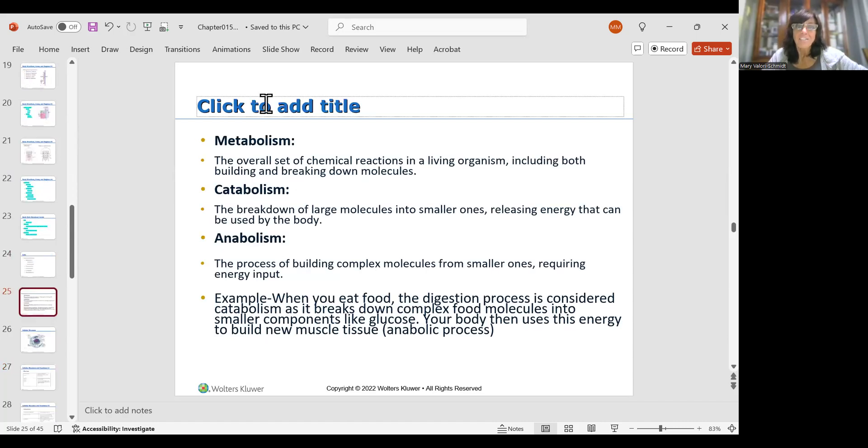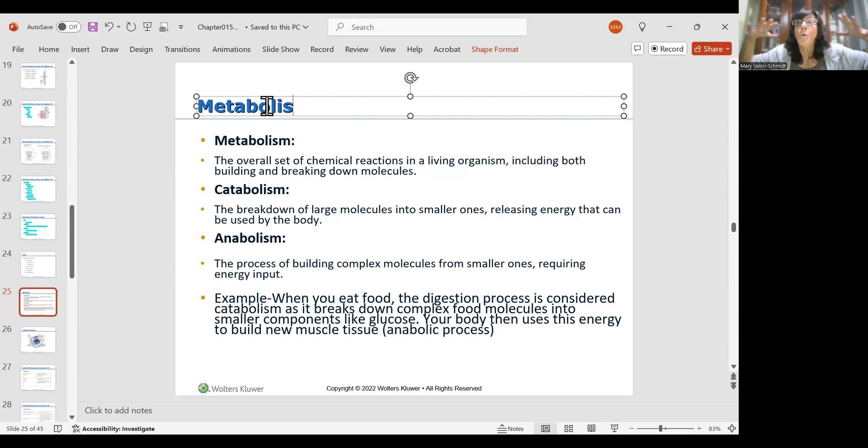When we talk about metabolism, metabolism is the set of chemical reactions that just keep you alive. Catabolism is breaking down large molecules into smaller ones, releasing energy. Anabolism is building up molecules from smaller ones, that requires energy. So a good example is when you eat food, the digestion process is really catabolism because it breaks down the complex food molecules into smaller components like glucose, sugar, and your body uses that energy to build new muscle tissue. That's the anabolic process. So catabolism is breaking something down to release energy, anabolism is building something up and that requires energy.